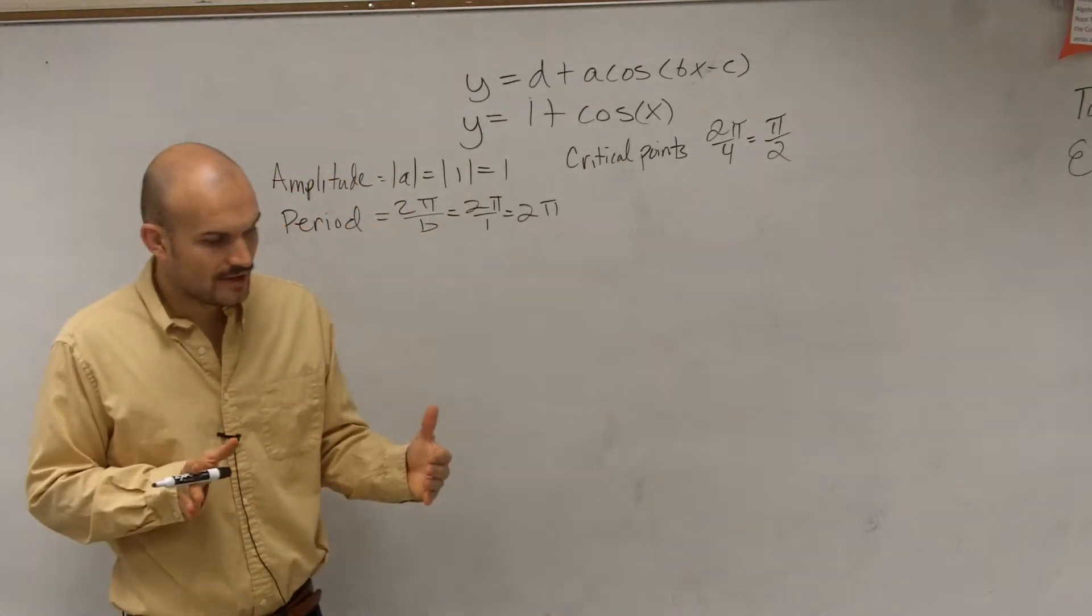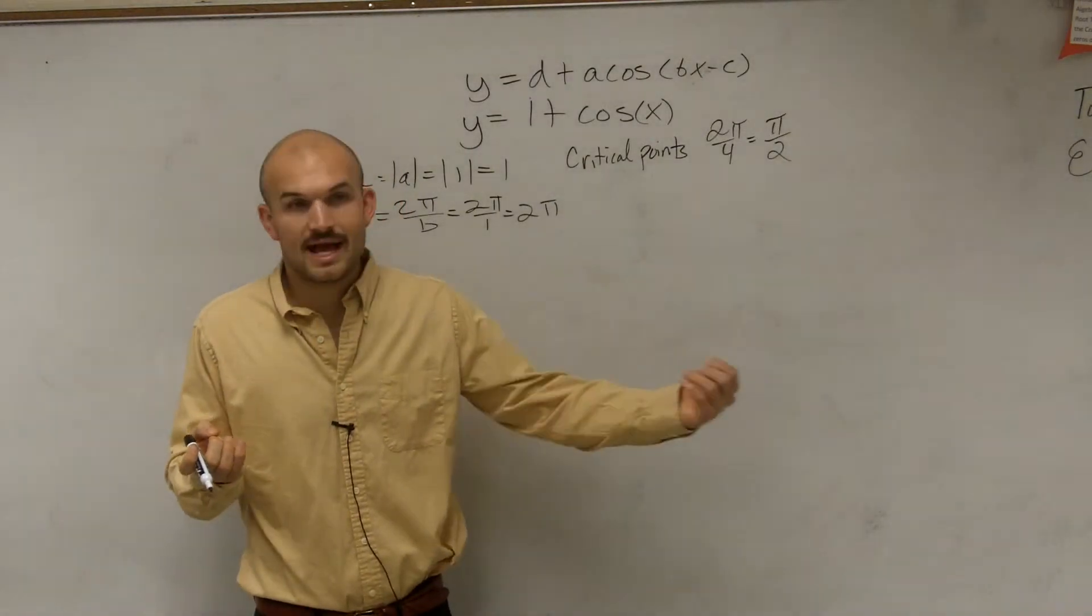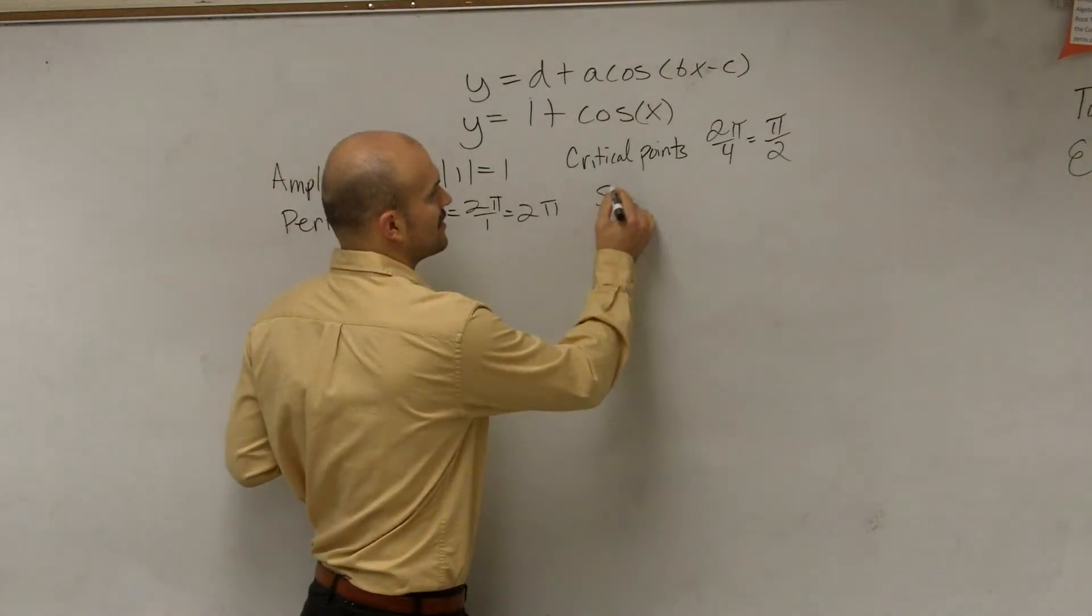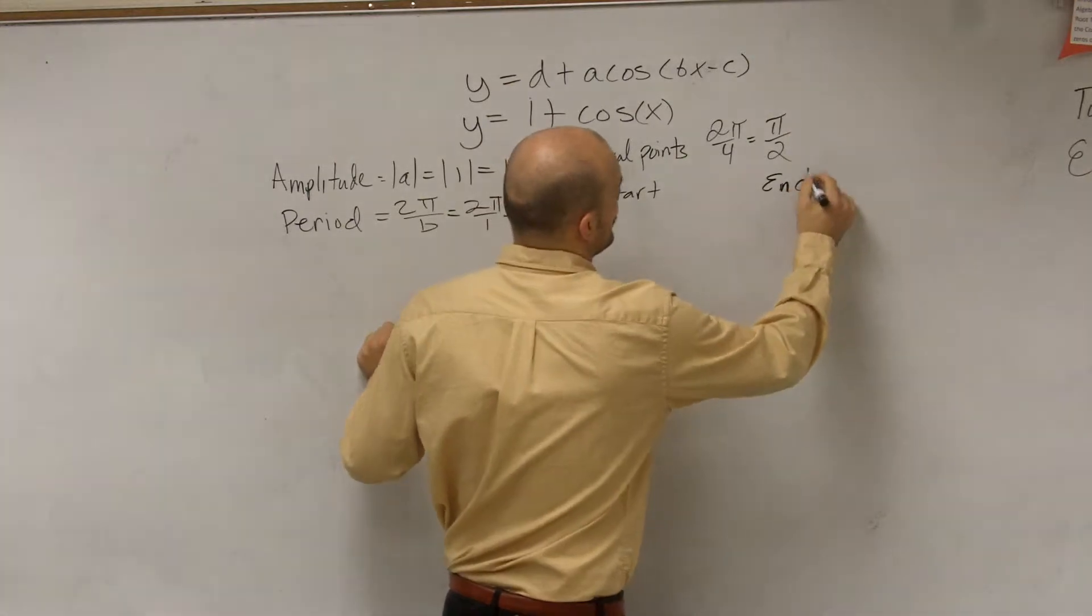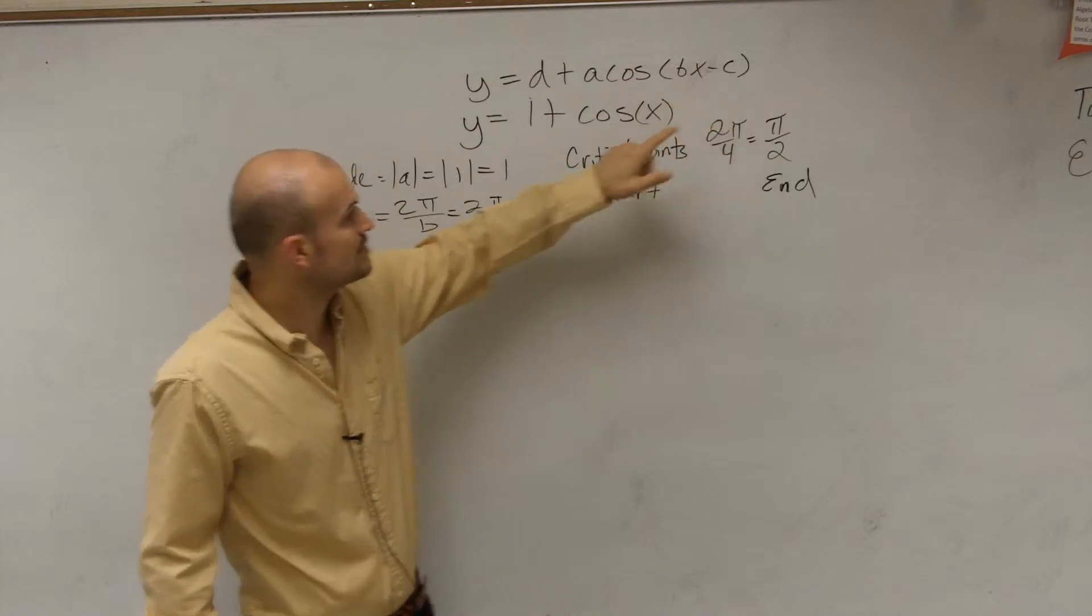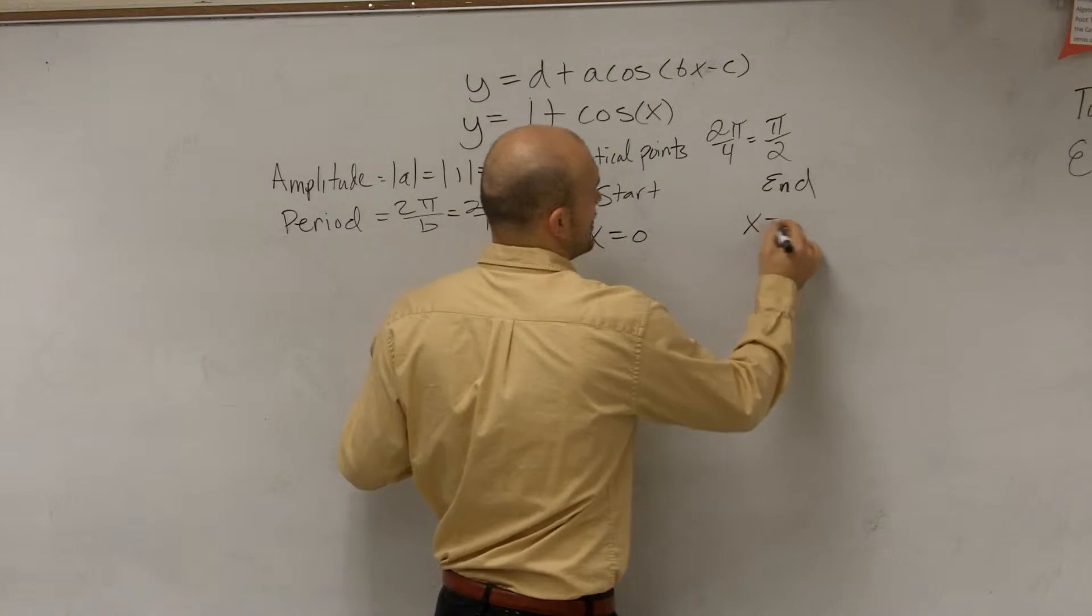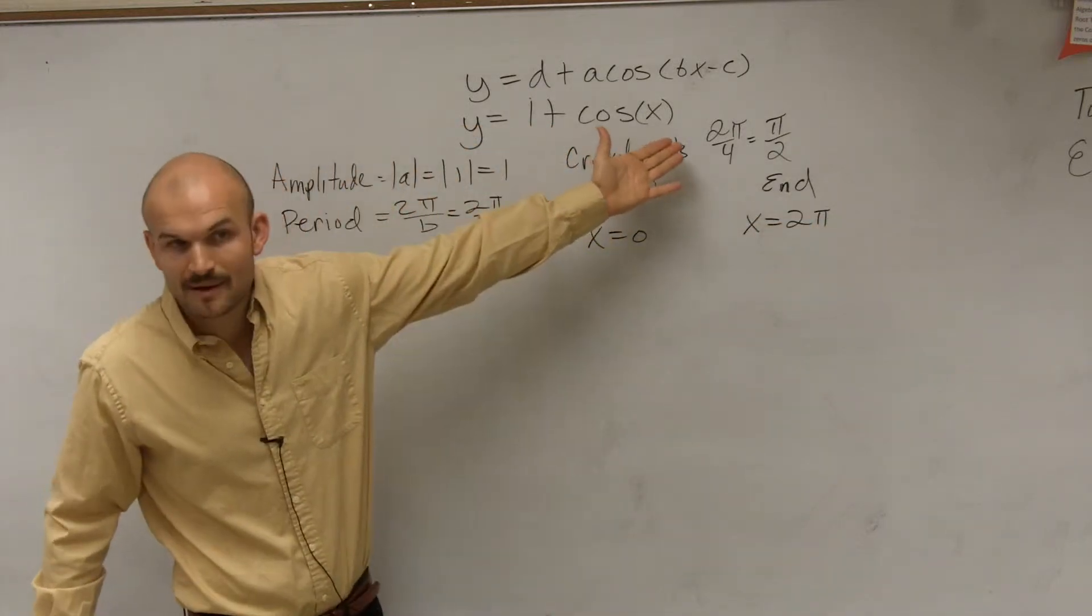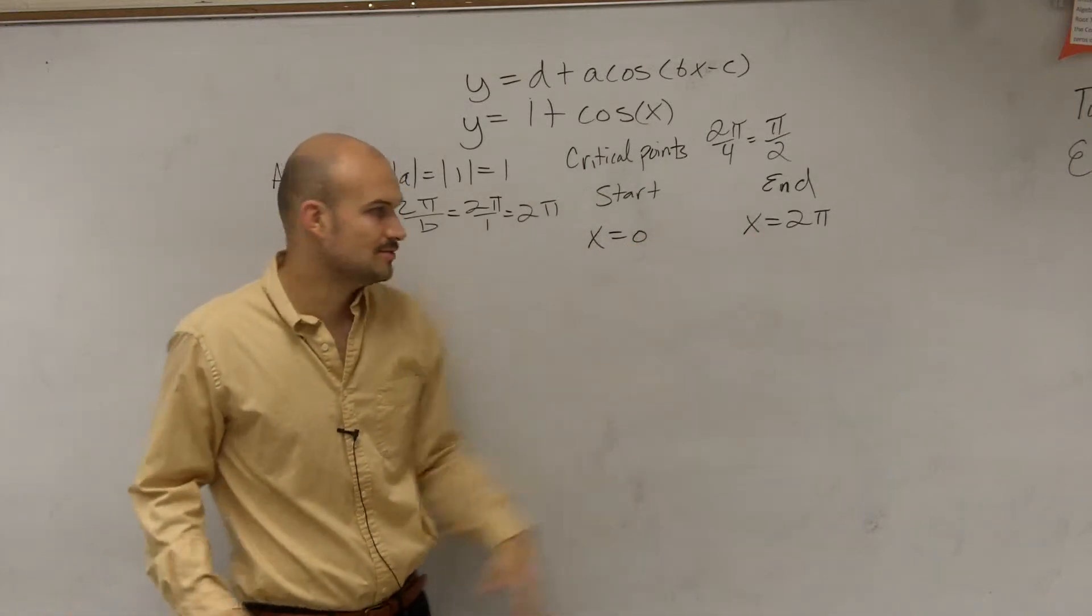And if you remember the parent graph, the parent graph of cosine started at 0, when x equals 0, and ended when x equals 2 pi. So what I'm going to do is, I'm going to have my equation start with that exact same equation, but I want to see if there's going to be any transformations. So what you do is, you take what's inside of your function, which in this case is just x, and set it equal to 0, and then set it equal to 2 pi. Now, since I have no transformations inside my function, my start and my end of my graph are also going to be 0 and 2 pi.